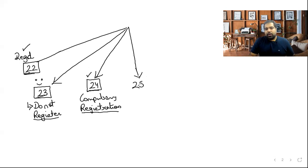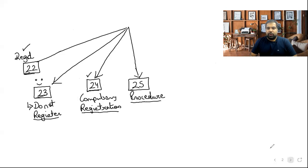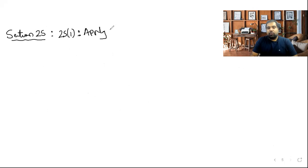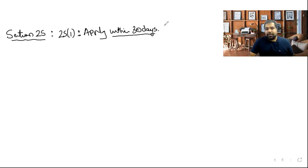Now that you know you need to register, Section 25 covers the procedure. You need to apply within 30 days of becoming liable — whether you crossed 10/20/40 lakh threshold or became liable under Section 24. Example: if you cross the limit on October 9th, apply by November 8th.